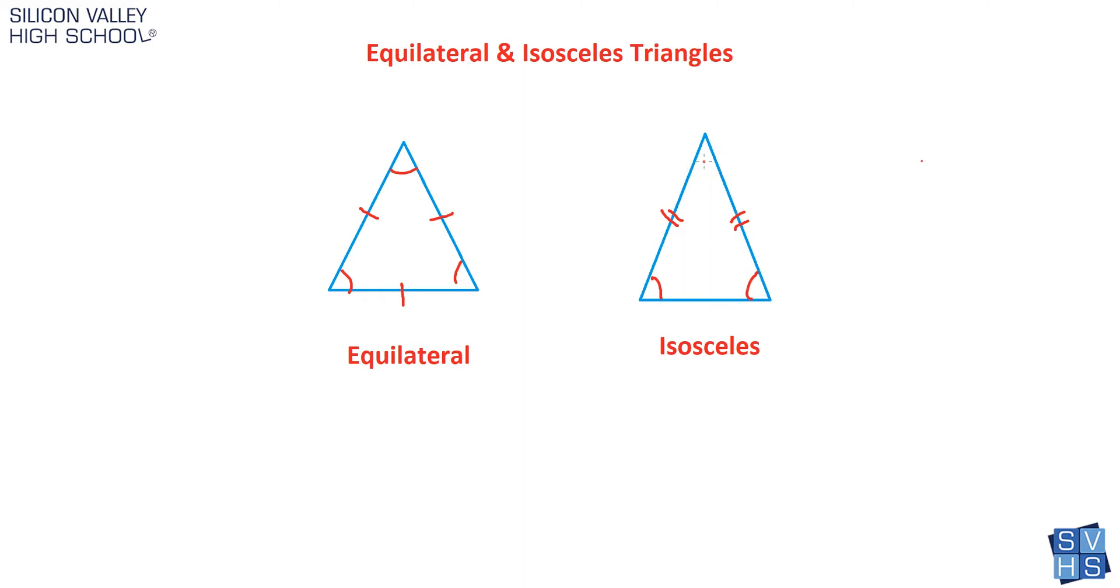So you can do a bunch of math with these equilateral and isosceles triangles. But those are the important facts you need to know going in. Three sides congruent, three angles congruent, specifically the angles equal 60. Two sides congruent, two angles congruent. And you don't know these values, you can definitely solve for them, but there's no rule. We had a rule over here, 60, 60, 60. There's no rule for the base angles, but the rule is that they're the same, and all three add to 180, so you can definitely do some math problems.